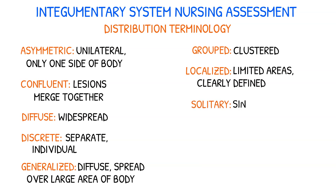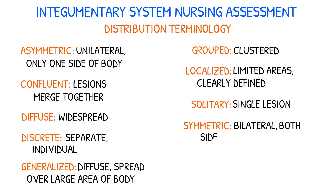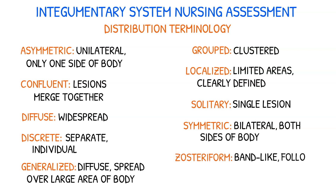Solitary distribution refers to a single lesion. Symmetric lesions are distributed bilaterally, meaning they are present on both sides of the body. Zosteriform is a band-like distribution of lesions that follows a dermatome, which is an area of skin supplied by a single nerve root. This is seen in conditions like herpes zoster, also known as shingles. For more information regarding types of skin lesions, watch the video on primary and secondary skin lesions.